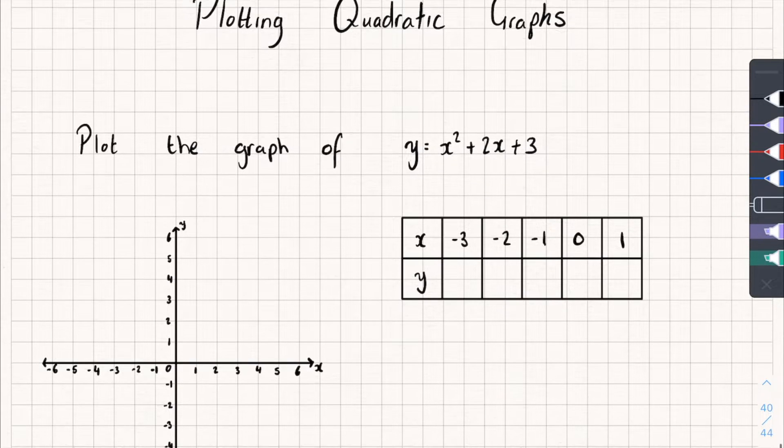It says plot the graph of y equals x squared plus 2x plus 3. Now I instantly know this is a quadratic because the highest power of x I have is x squared. If there was an x cubed, no longer quadratic. Because it's an x squared, it's a quadratic. But you could plot a cubic or any other graph this way too. So let's highlight this.